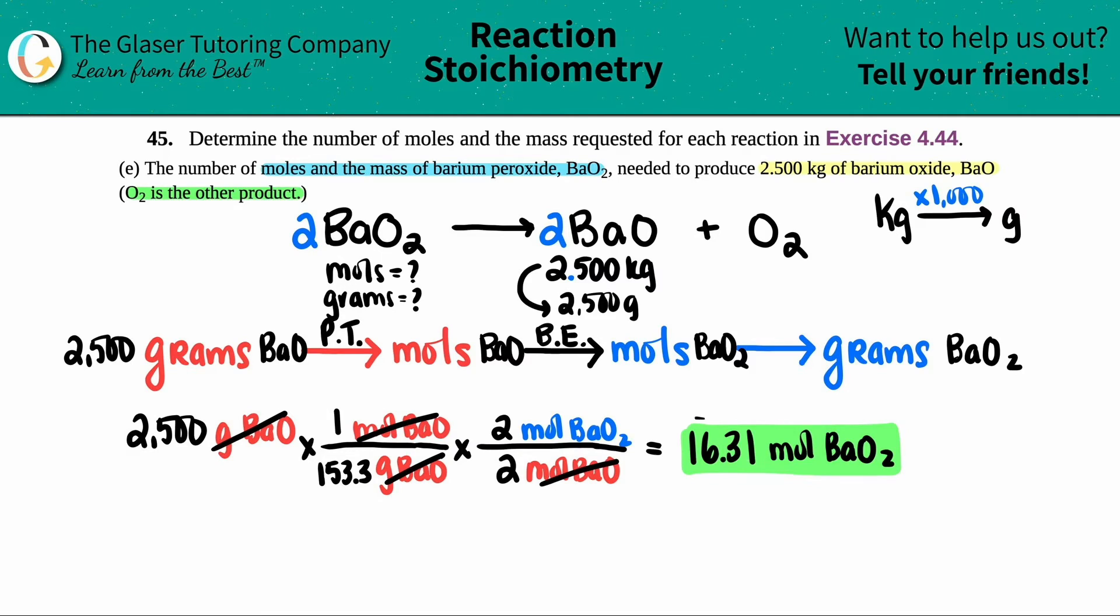But there are some teachers or professors out there that go hard on the sig figs. When you're converting and when you're using all these conversion factors, the significant figures in any of these don't count for anything. The sig figs at the end of the question need to be the amount that you started with. Since you started with four sig figs, these zeros count in the 2.500, you need to end with four sig figs. That's the rule. Whatever you start with, that's how many sig figs you got to end with. So here's the first answer.